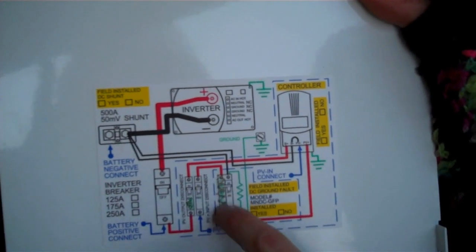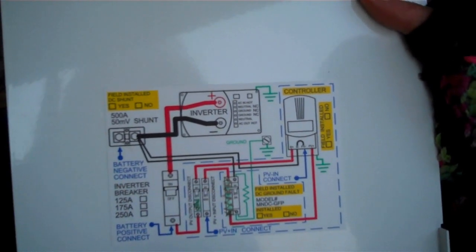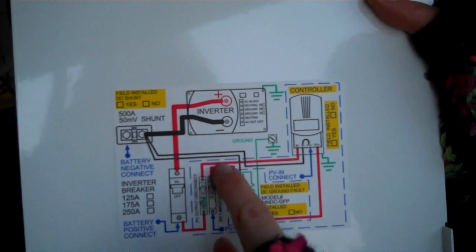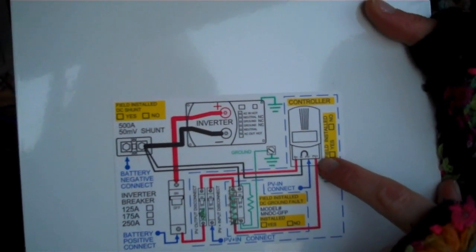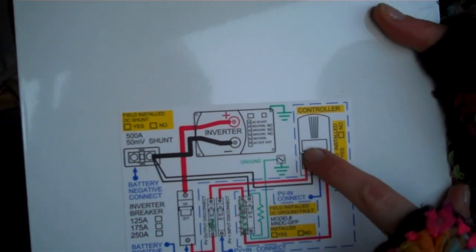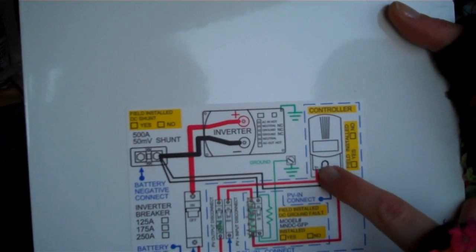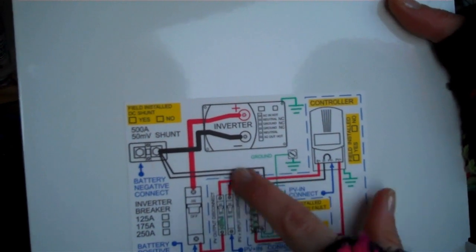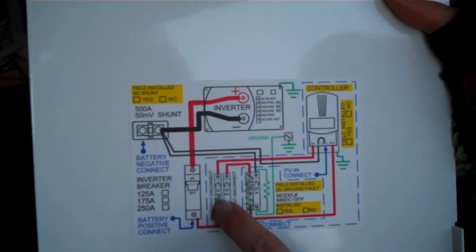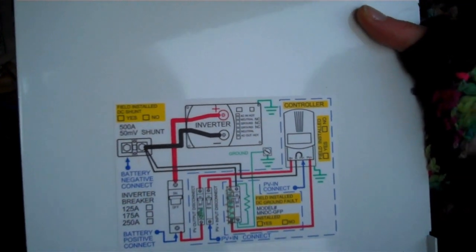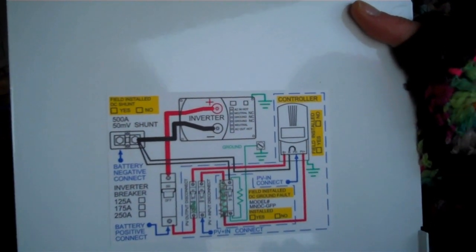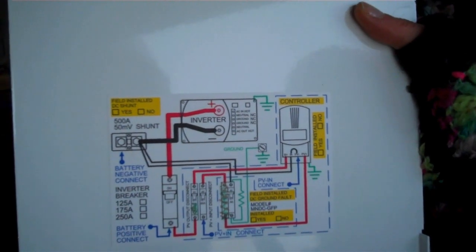This right here is actually a ground fault protection device, but the size of our system doesn't require we use it, so we just kind of skipped over that and we go directly to the PV positive in the charge controller. From there, it feeds back out of the charge controller to a battery positive, which flows back to the 100 amp breaker. That 100 amp breaker then goes to the main breaker of the Midnight Solar MNDC 125, which is the mini disconnect panel.